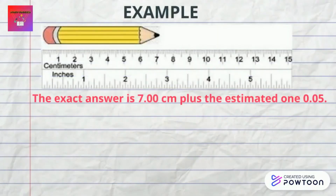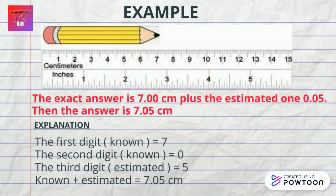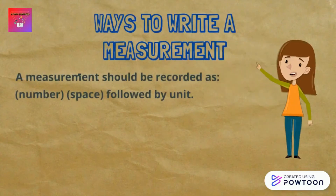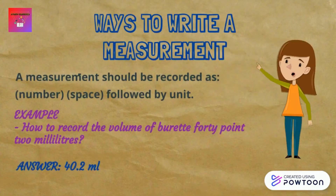To understand better, let's look at an example. We are measuring the length of a pencil using a ruler. As you can see in the diagram, the exact reading is 7 centimeters. However, significant measurement includes a known and estimated digit, so our estimated value is 0.05 centimeters, which is between 0.04 and 0.06 centimeters. This makes the final answer 7.05 centimeters, which is the sum of 7.00 centimeters and 0.05 centimeters.